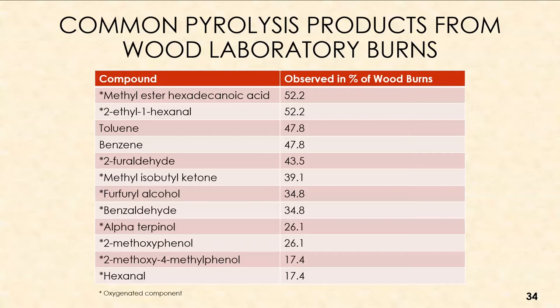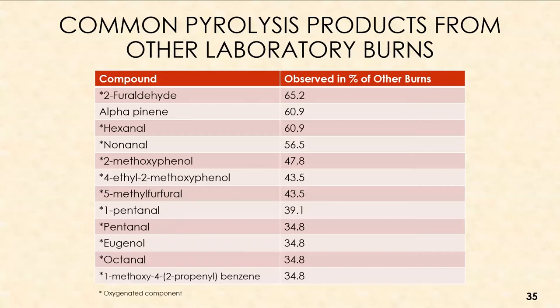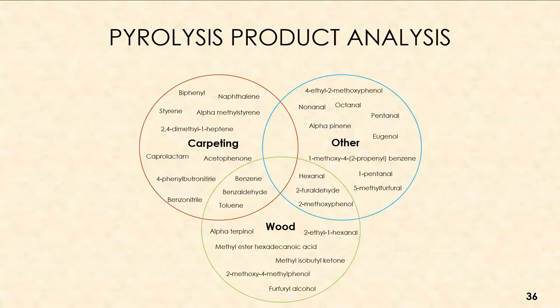For wood, a large majority of oxygenated components were observed, including methyl ester, hexadecanoic acid, 2-ethyl-1-hexanol, and 2-furaldehyde. Similarly, vinyl and laminate flooring also showed a large number of oxygenated components. In a Venn diagram comparison: carpeting and wood share benzene, benzaldehyde, and toluene, while carpeting and 'other' share nothing. Wood and 'other' share hexanol, 2-furaldehyde, and 2-methoxyphenol. Notably, there was no overlap among all three substrate groups simultaneously.